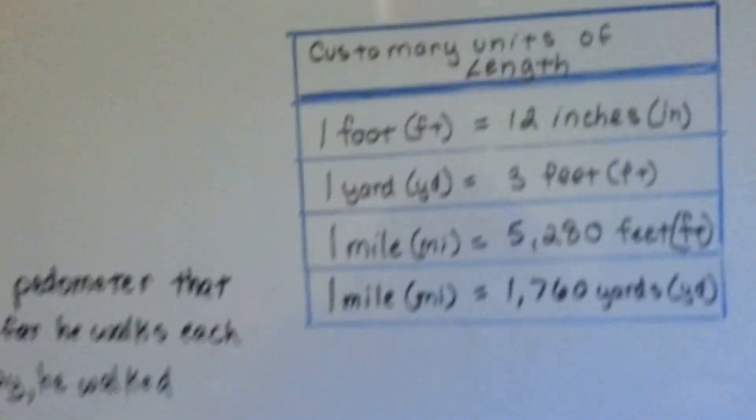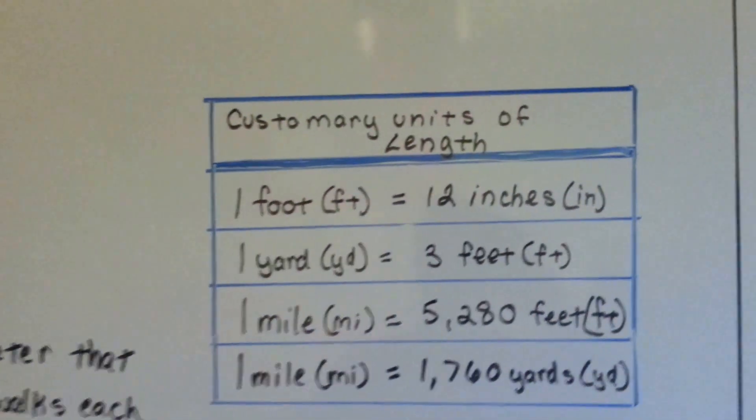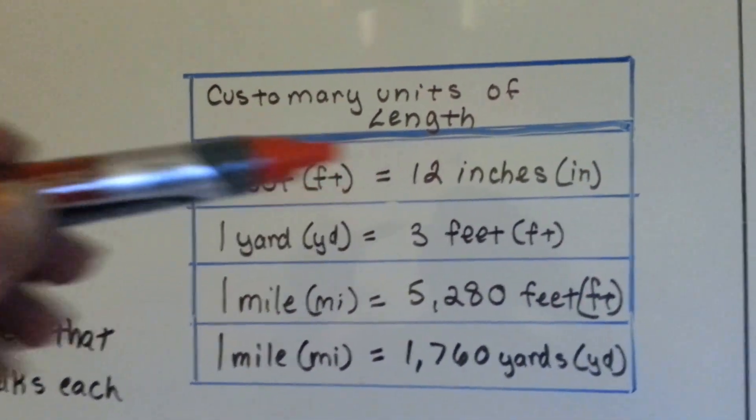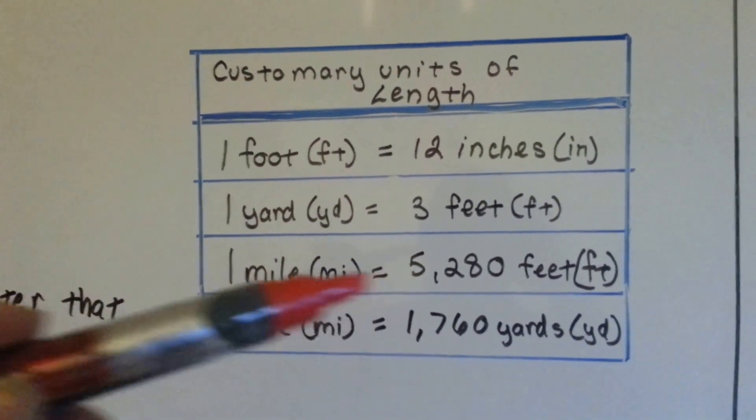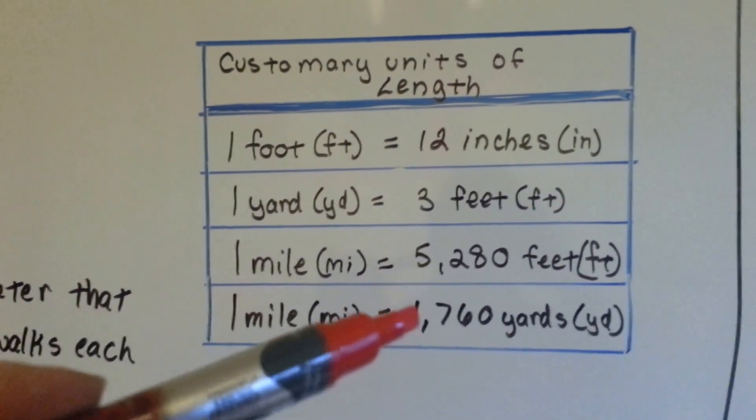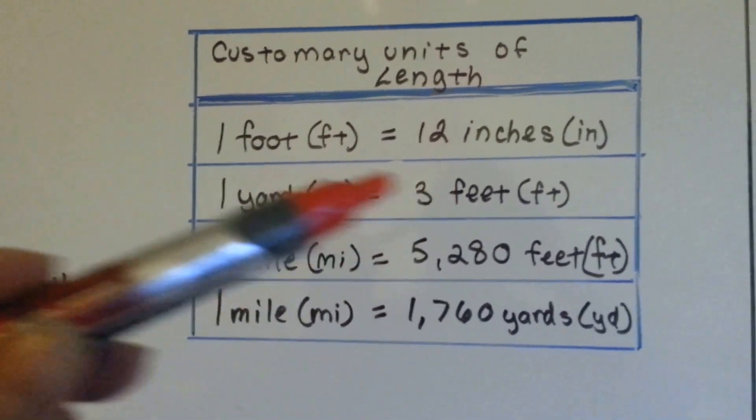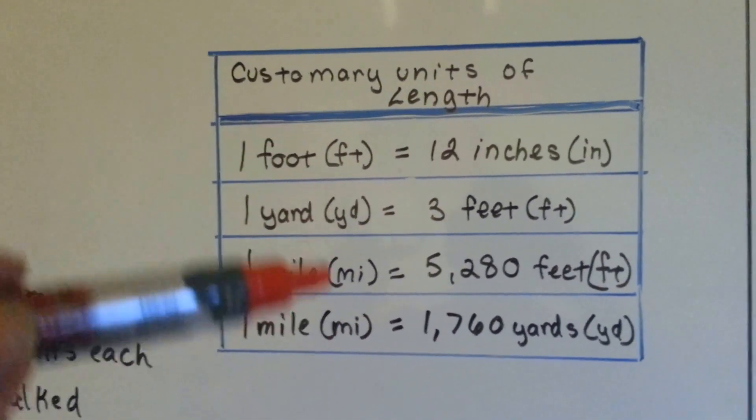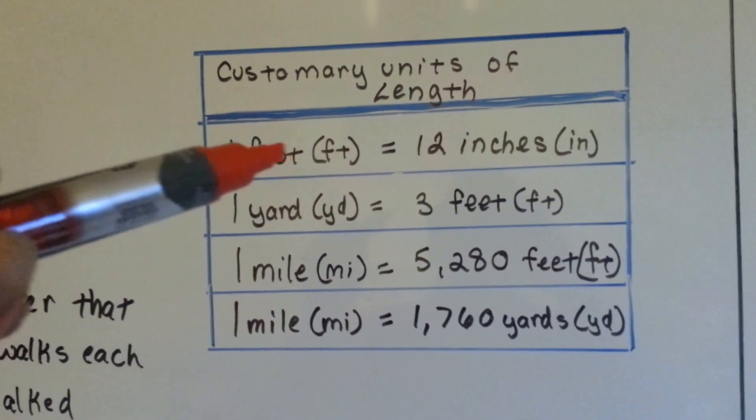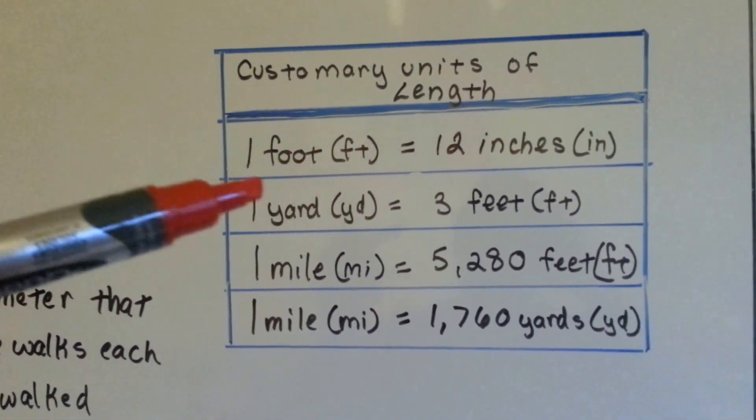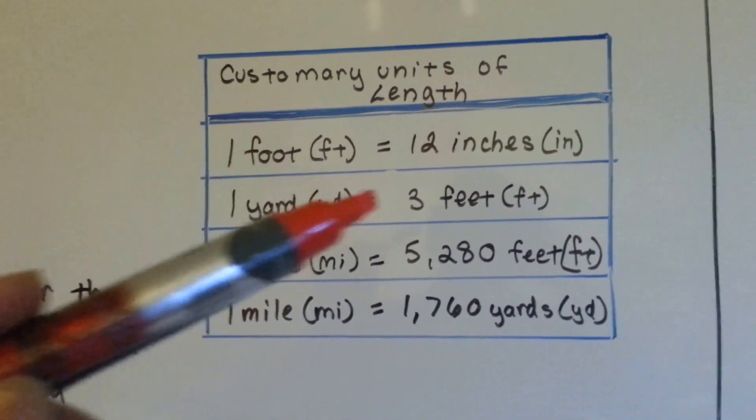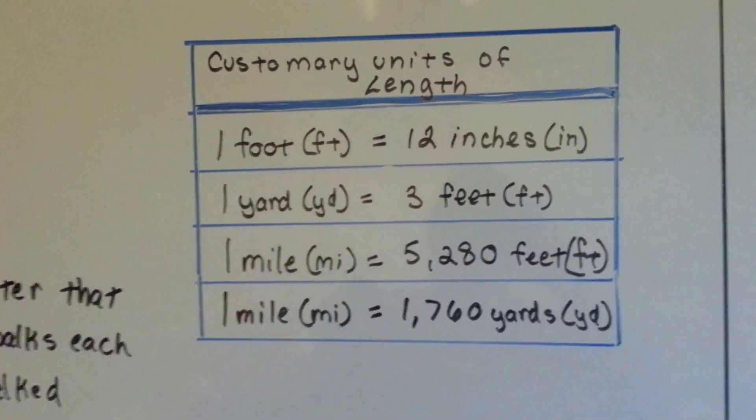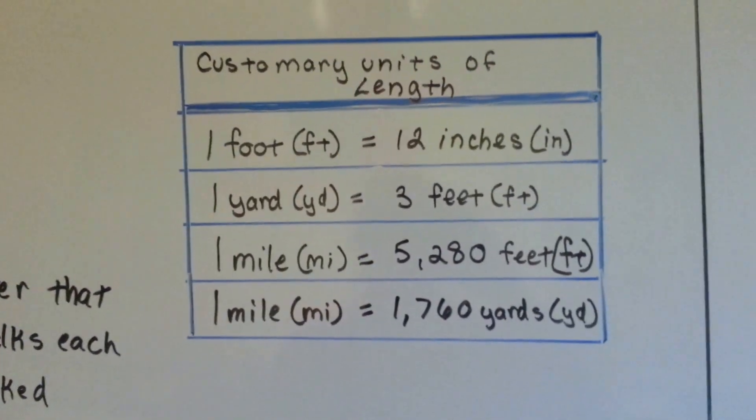Here is a chart showing customary units of length. 1 foot is 12 inches, 1 yard is 3 feet, 1 mile is 5,280 feet, and a mile is also 1,760 yards. Because a yard is 3 feet. You can see the abbreviations we can use: FT for foot, IN for inches, YD for yard, MI for mile. Do you notice that foot became feet when there was more than one? The plural is feet.